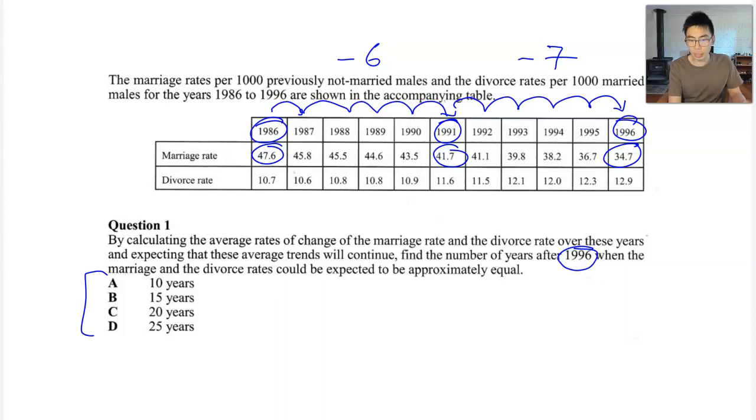Now if we look at the divorce rate and do the same kind of thing, let's start off in 1986. We start off at a rate of 10.7 and it looks like it goes up. Now how much has it gone up by when we have jumped five years ahead? It looks like it's gone up by about one. So let's just say plus one.